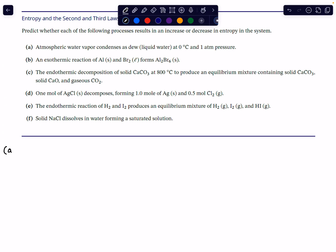The first process I want us to consider is atmospheric water vapor condensing as dew to liquid water at zero degrees Celsius and one atmosphere. The basic idea here is we take water vapor — gaseous water, in the vapor phase — and that then condenses to liquid water at zero degrees and one atmosphere. So it is a process where gas condenses to liquid water: vapor phase to liquid phase.